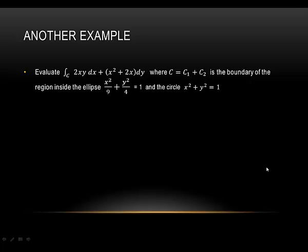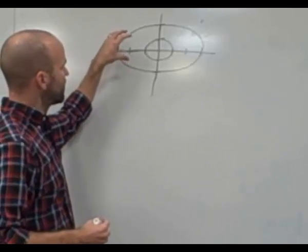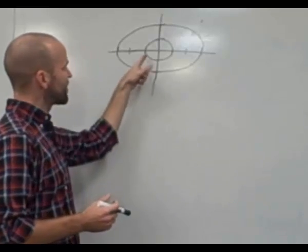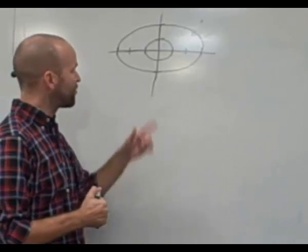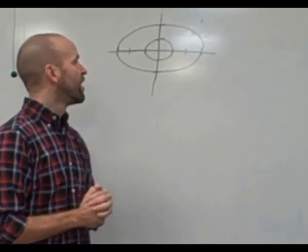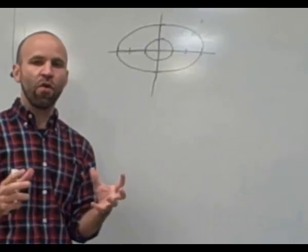Here's another example. We're going to evaluate the line integral of 2xy dx + (x² + 2x) dy about curve C, where C is the boundary of the region inside the ellipse x²/9 + y²/4 = 1 and outside the circle x² + y² = 1. We're dealing with the region between the ellipse and the circle — all points outside the circle yet inside the ellipse. To apply Green's Theorem, we need to represent the boundary of this region with a positively oriented curve, and we can do that even if the region has a hole, as long as we're careful.